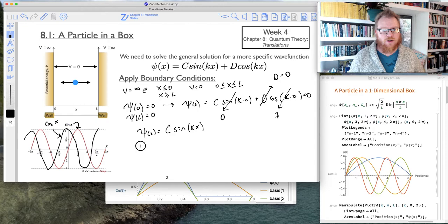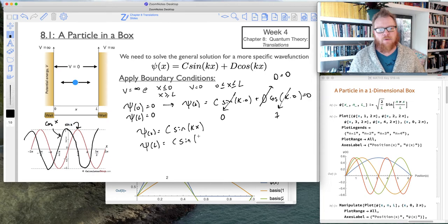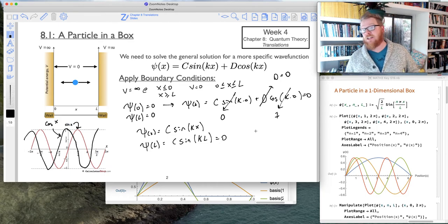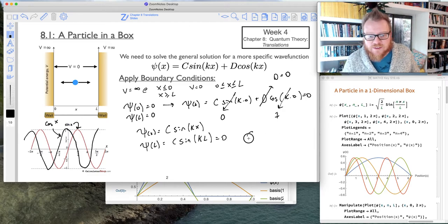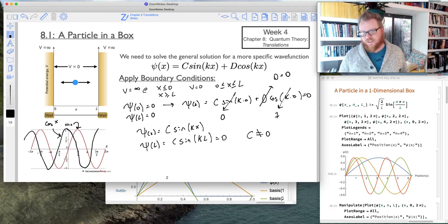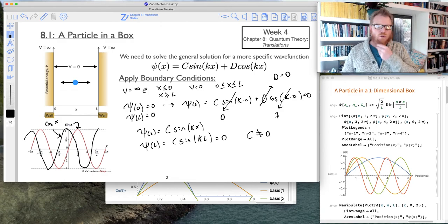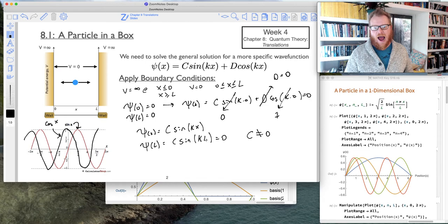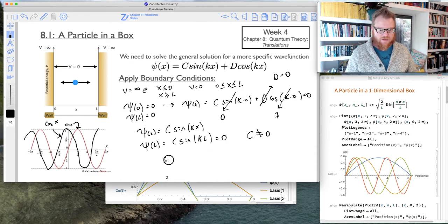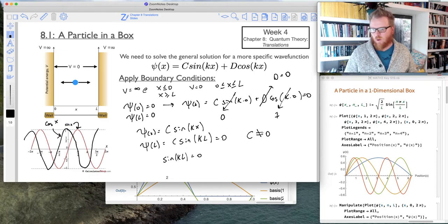We know that when x is 0, sine of 0 is 0, so that's good. We've established that boundary condition. And so now what we also have to say is psi, when x is equal to L, we know that has to be 0, so that's going to be C times sine of kL. And we know that that also has to be equal to 0. And further, we know this C constant cannot be equal to 0, because we have to have this normalization constant there.